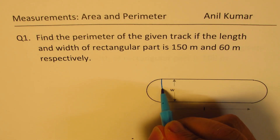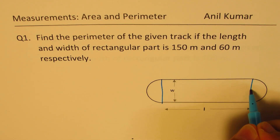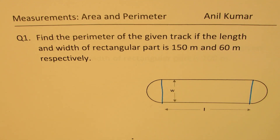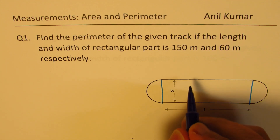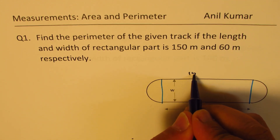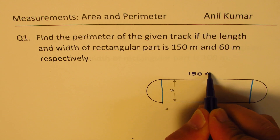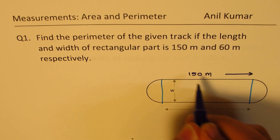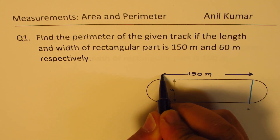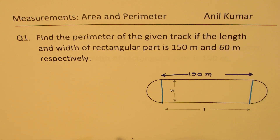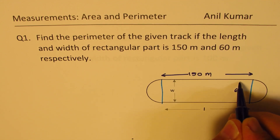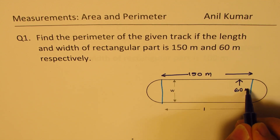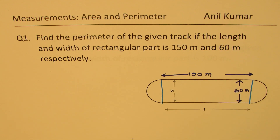When I say rectangular part, I mean this portion right — that is the rectangular part. We are given that its length L is 150 meters and the width is 60 meters. We need to find the perimeter.